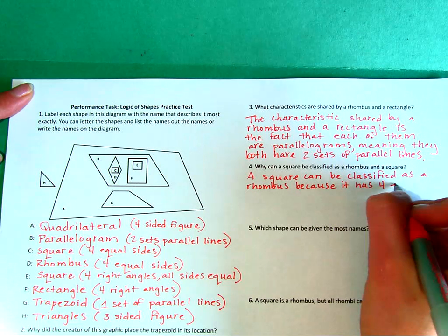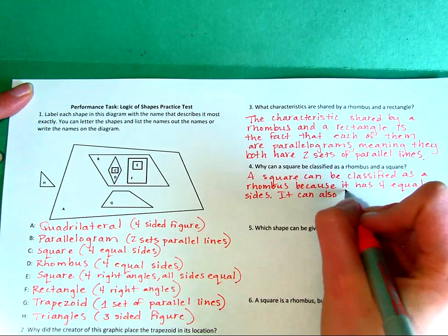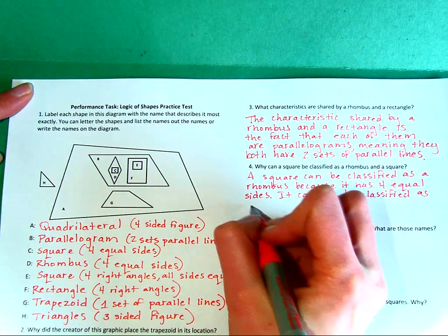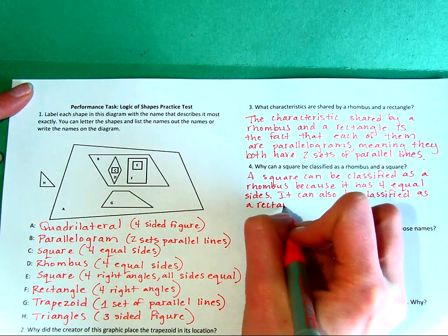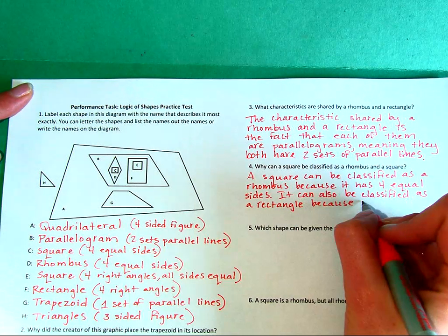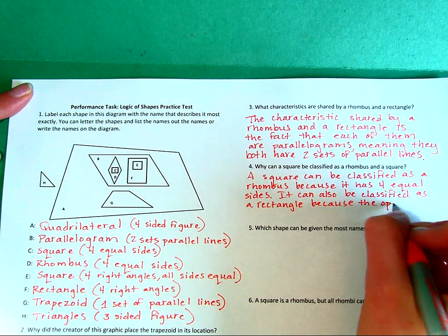So a square fits both of these qualifications — opposite sides are equal and it has four right angles.